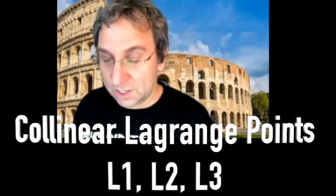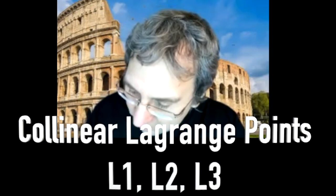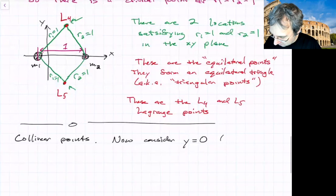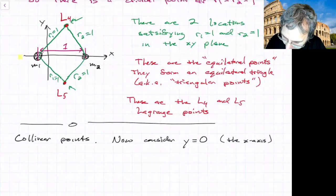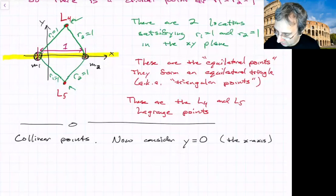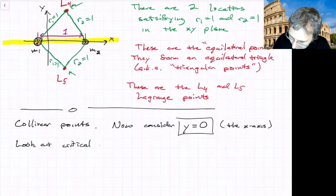The other points that people have been interested in are called the collinear solutions. We're going to look along the line of primaries. Now we will consider what we ignored last time, which was y equals 0, the x-axis. Somewhere along that x-axis, there are other equilibrium points. So where are they? We can just look at critical points of the effective potential along the x-axis.